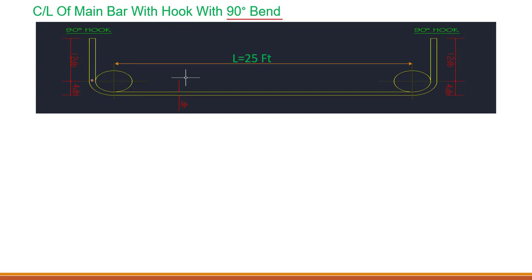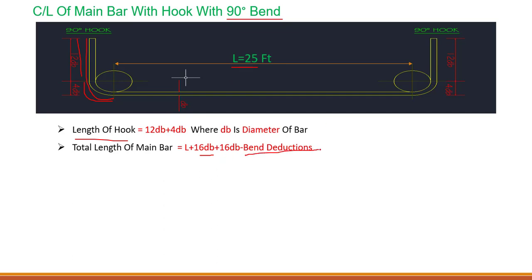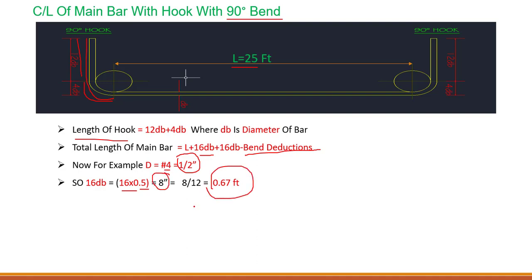Now, what if we have a 90-degree bend? The bar will look like this. The length of the hook is 12db plus 4db, which equals 16db total from this position up till here. The total length of the main bar will be: length plus 16db at one end and 16db at the other end, minus the bend deductions. For a 4-number (half inch) bar, 16db equals 16 x 0.5 inch = 8 inches = 0.67 feet.